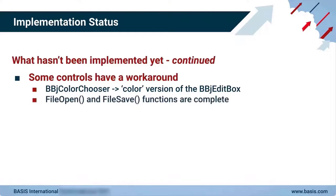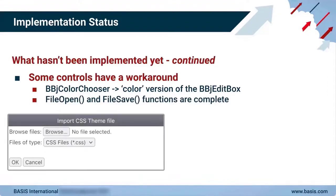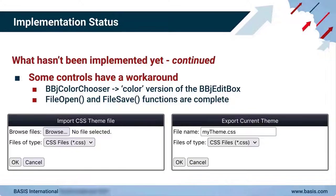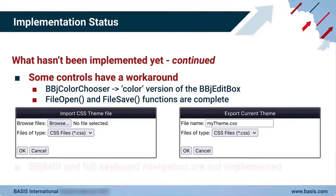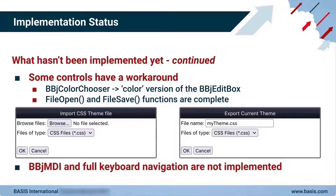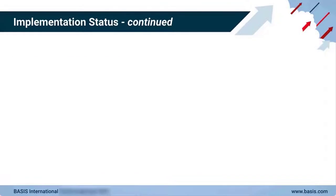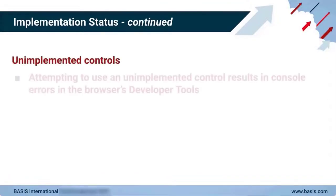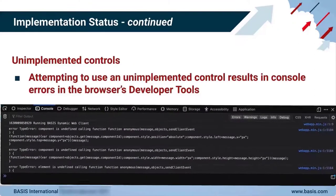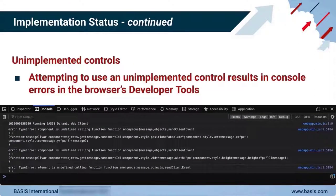Some of those controls are being actively worked on now, and others, like the BBJ color chooser, have a workaround using the color version of the BBJ edit box. And even if the file chooser control isn't ready yet, the file open and file save functions are complete. The dynamic web client also doesn't yet support concepts such as BBJ MDI and full keyboard navigation. When you attempt to run a program with an unsupported control, the browser's Developer Tools console displays errors detailing undefined calling functions and the app will terminate.